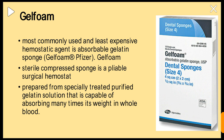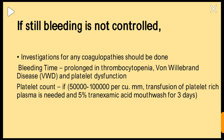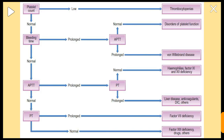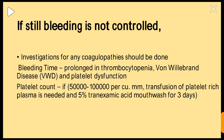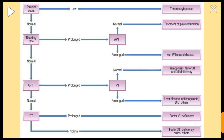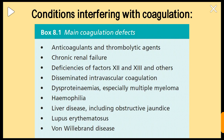If bleeding is still not controlled, we need to suspect coagulopathies. Investigations should be done in sequence: bleeding time, platelet count, aPTT (activated partial thromboplastin time), and PT (prothrombin time). Prolonged bleeding time may indicate von Willebrand disease or platelet dysfunction. If platelet count is below 50,000, transfusion must be done; if 50,000 to 1 lakh, transfusion is needed along with 5% tranexamic acid mouthwash.